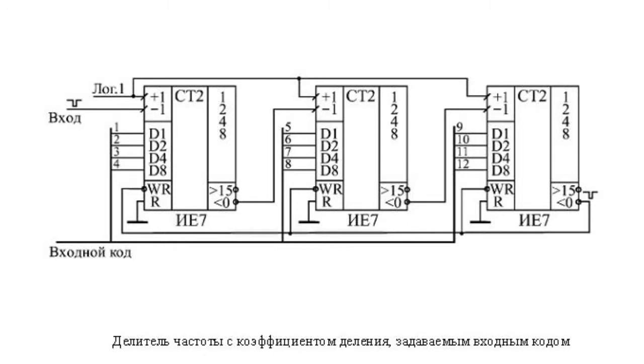Using these counters you can build frequency dividers with a division factor that can be randomly changed with the help of entry code. This type of frequency dividers are widely used in analog digital systems working with analog signals of various frequencies.